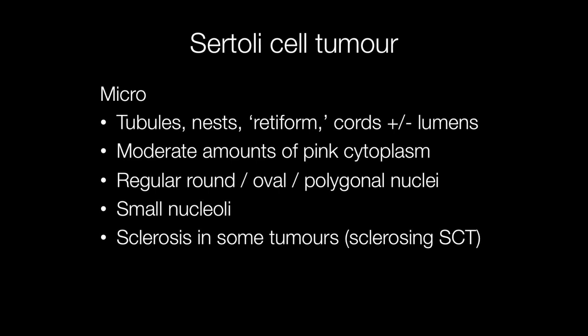Histologically, Sertoli cell tumours have a number of different patterns, but the key pattern is tubule formation. They may also form nests, there may be retiform areas, and there may be cords that may or may not have lumina. The cells have moderate amounts of pink cytoplasm and the nuclei may be regular, round, oval or polygonal and have small nucleoli. Another feature seen in some Sertoli cell tumours is sclerosis; if this is pronounced, the term sclerosing Sertoli cell tumour is sometimes used.